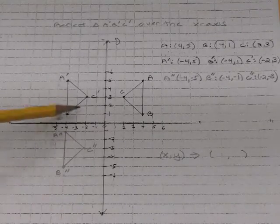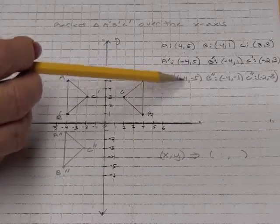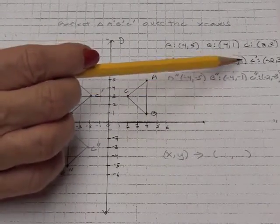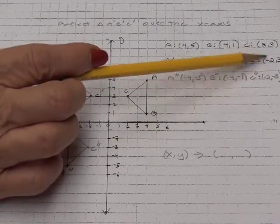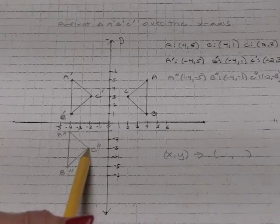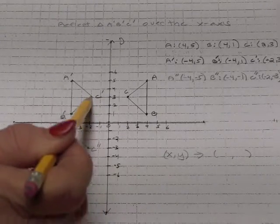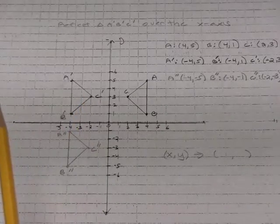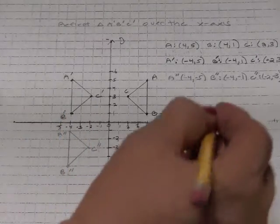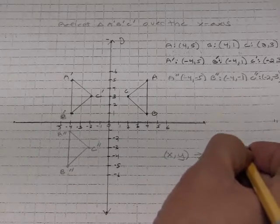When we reflect over the X-axis, it's only the Y coordinates that are changing. X stays negative 4, but Y goes from 5 to negative 5. In B, the negative 4's are the same, but positive 1 goes to negative 1. And in C, the negative 2's are the same, but positive 3 goes to negative 3. So any point that starts out with X comma Y will end up with X comma negative one times Y.